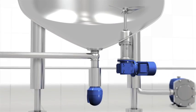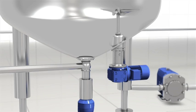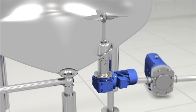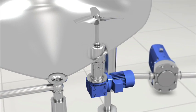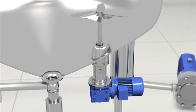Bottom mounted agitator type ALB. Service of the agitator can be carried out from ground level, which will make the inspection fast and easy.